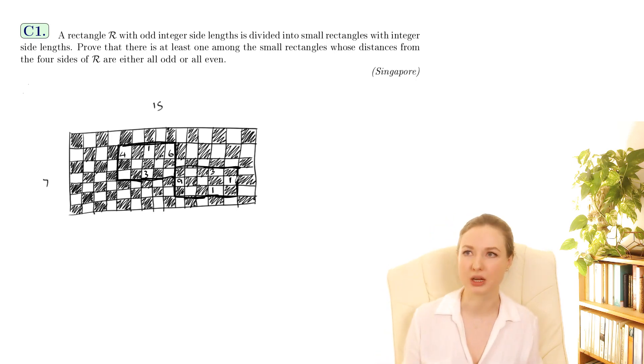So why might that be? So going back to the idea of the mutilated chessboard problem where the problem there was that there were too many black squares to cover with dominoes.